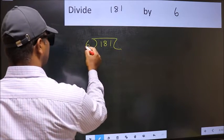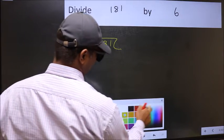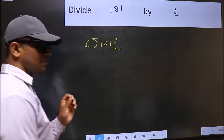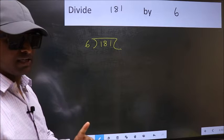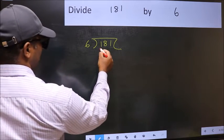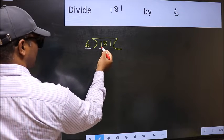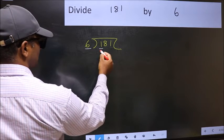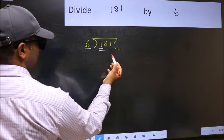181, 6 here. This is your step 1. Next, here we have 1. Here 6. 1 is smaller than 6. So we should take two numbers, 18.